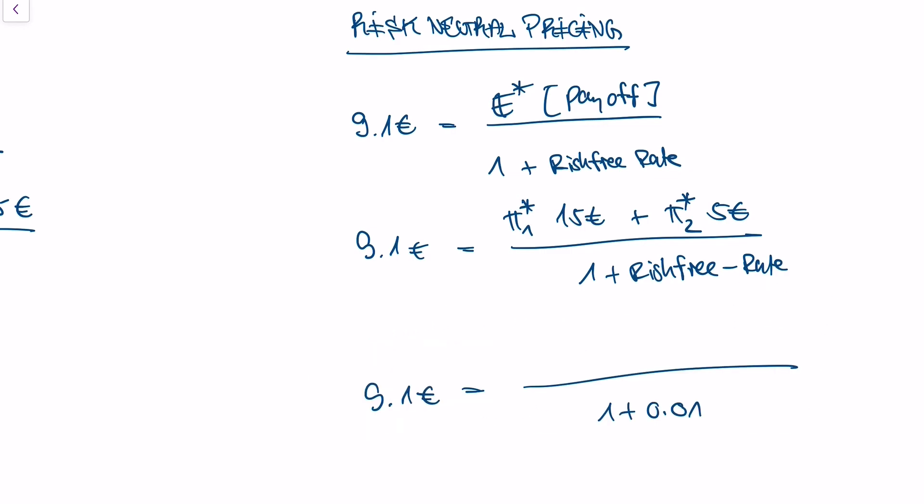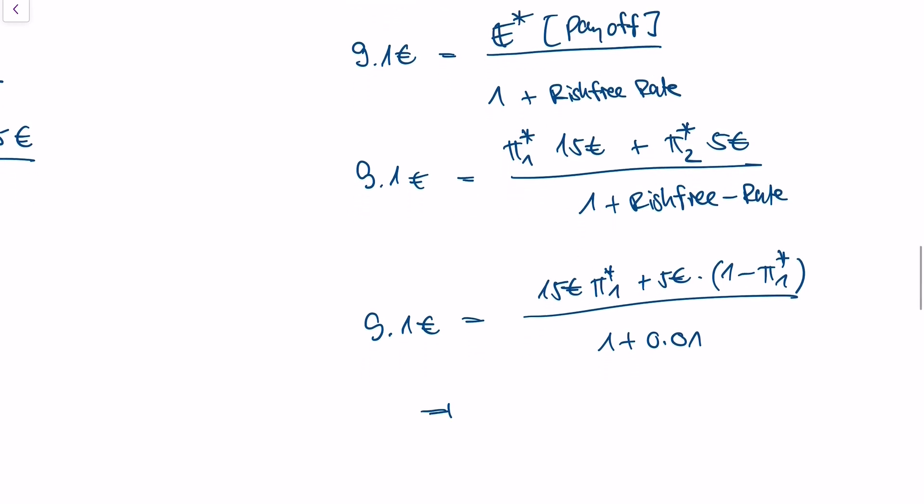In our example, we have 15 euros times pi star 1 plus 5 euros times 1 minus pi star 1. Because our probabilities, they are probabilities, they need to add up to 1. With this, we will get that pi star 1 is 50% and pi star 2 is also equal to 50%.